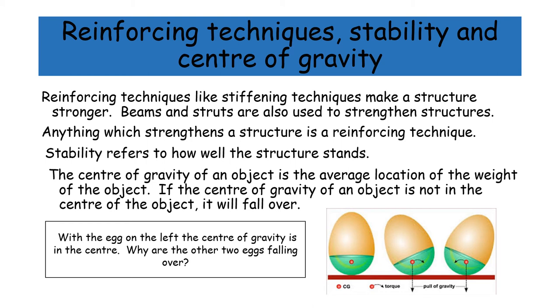If the center of gravity of an object is not in the center of the object, it will fall over. With the egg on the left, the center of gravity is in the center. Why are the other two eggs falling over?